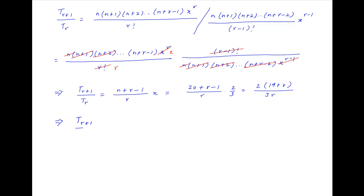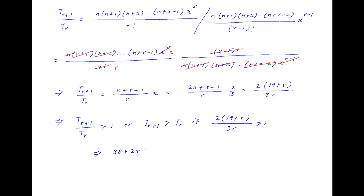Now the value of this ratio T(r+1) upon T(r) will be greater than 1 — in other words, the (r+1)th term is greater than the preceding term T(r) — if 2(19+r) upon 3r is greater than 1. Cross-multiplying, we get 38+2r is greater than 3r, which implies that r is less than 38.